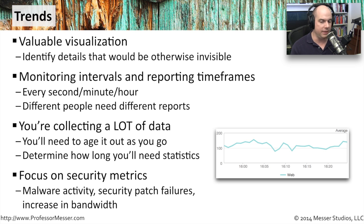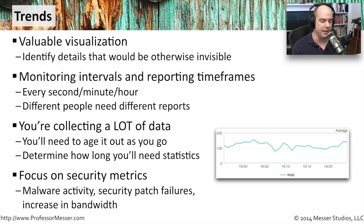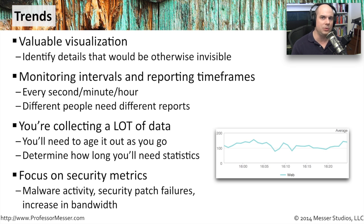Think about what security metrics you would like to look for. You want to understand if there was an increase in malware activity, or if you're getting more spam coming into your environment. Maybe your spam reporting system can tell you there is a big uptick in spam, and that will put you on alert for more phishing activity. Maybe you want to see how many devices on your network have received patches — or perhaps more importantly, which devices did not get patched in the latest update. And sometimes an increase in bandwidth can lead you to more information about what might be going on in your environment.